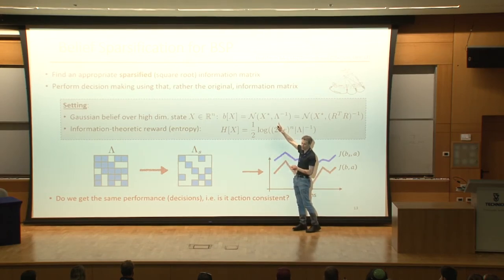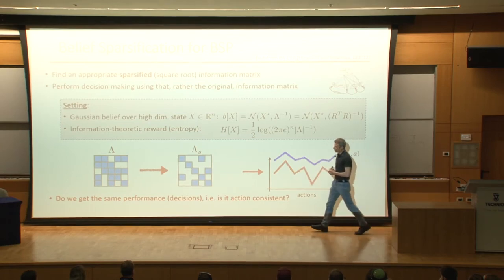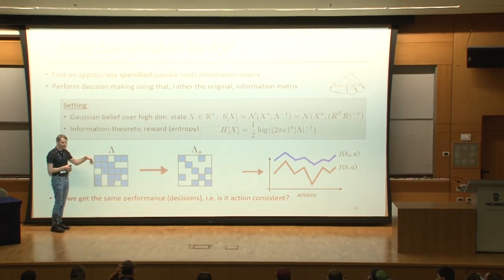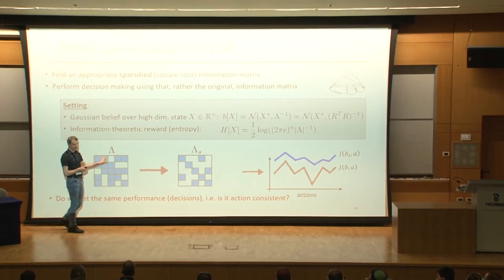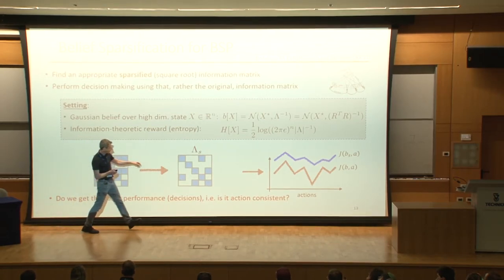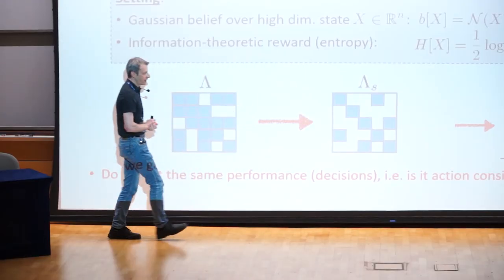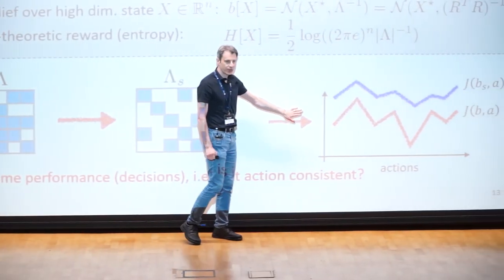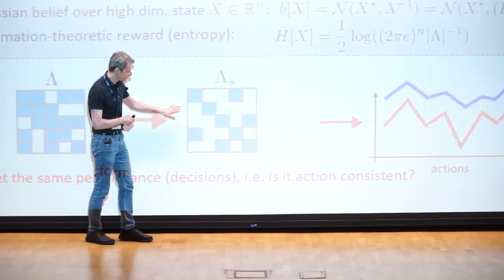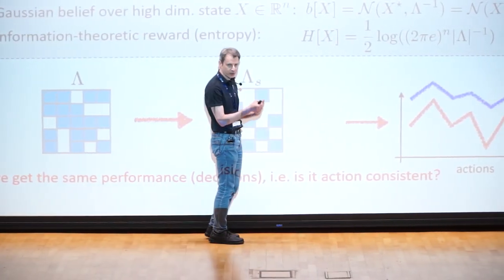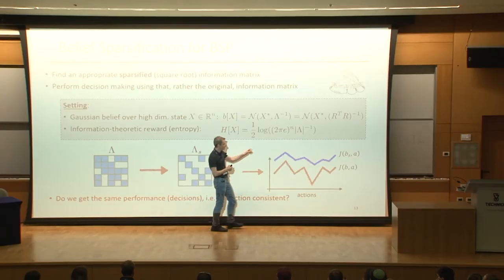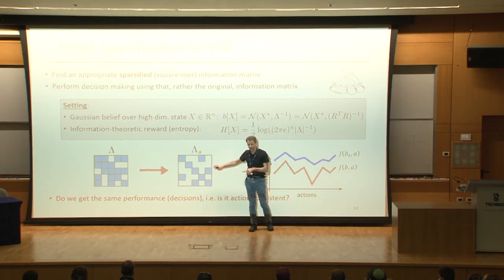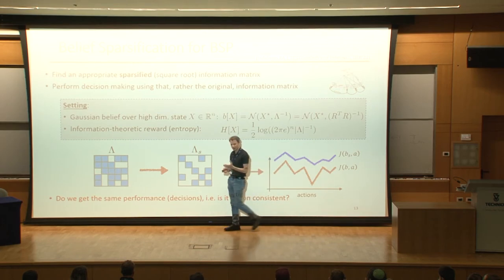With a Gaussian belief, we have a mean vector and an information matrix — the inverse of the covariance matrix. The concept is: why not take this information matrix and simplify it by sparsifying, throwing away some elements? The question of course is: do we get the same decisions, and if not, how bad is it? Because if we sparsify this matrix, many calculations become more efficient — for example, computing the determinant of a matrix is much easier when the matrix is sparser. The question is what do we lose.